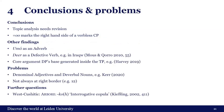From this we can draw some conclusions. I think the topic analysis of the enclitic needs some revision, and I think that 'o' marks the right-hand side of a verbless CP. Other findings include that 'umo' may be analyzed as an adverb, 'deir' may be analyzed as a defective verb as also in Iraku, and core argument DPs may indeed be base-generated inside the TP and move outside, as suggested in Harvey 2019. Some problems with my analysis are that nominal adjectives and deverbal nouns have not yet been explained, and the marker does not always occur at the right border, as in example 12.